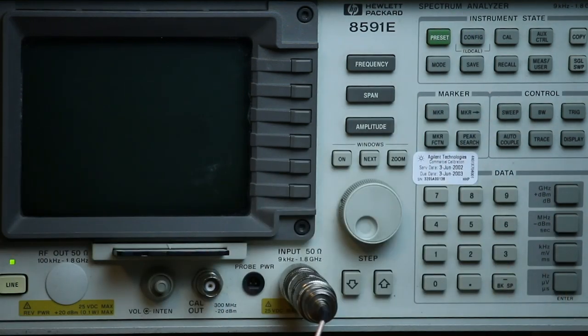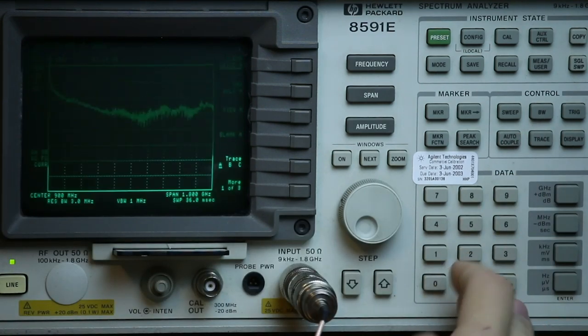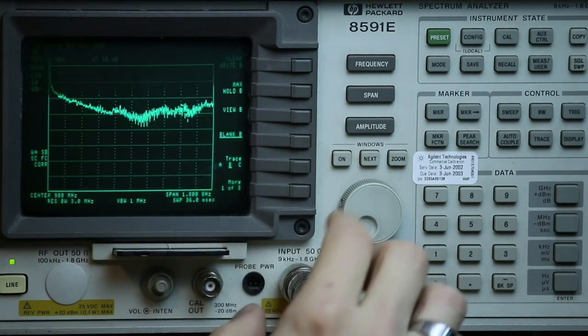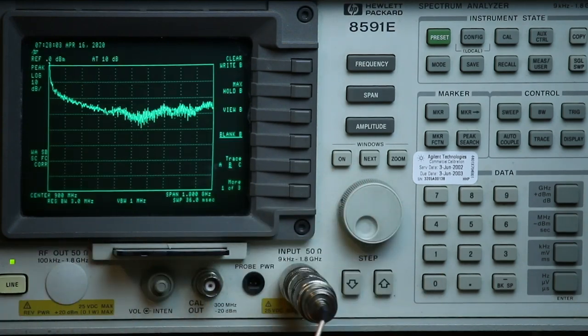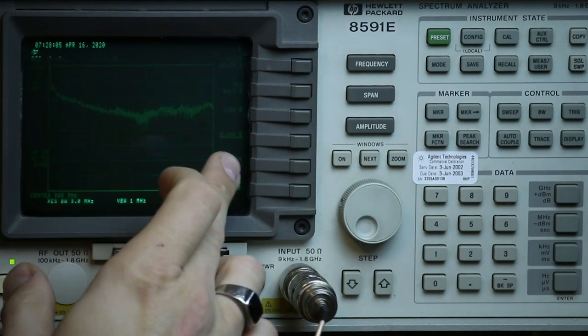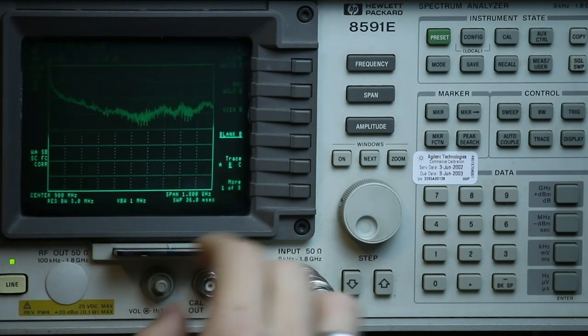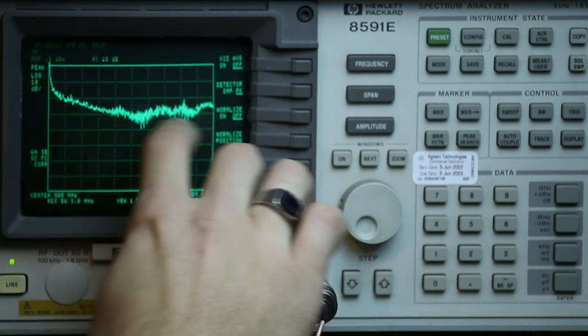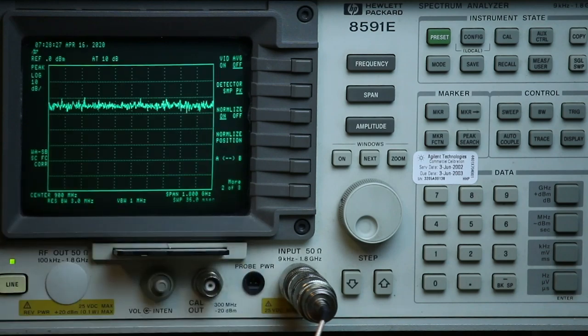So how do I do that? Let's hit preset to make sure everything's cleared out. Okay, so there's my signal. I go to trace. I want to sample that trace. Okay, so I go to B and then I clear right B and blank B. Now this process is going to be different for every spectrum analyzer. So that's stored in B. Now I want to go to normalize and that should flatten it out. And that's what it looks like. Now it's flat. I can take a decent measurement.